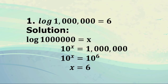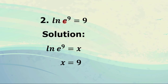Moving on to number 2: ln of e raised to 9. The natural logarithm and this exponential expression are inverse functions of each other. So if we have ln of e raised to 9, the ln and the e will cancel out and the answer is 9. We let ln of e raised to 9 equal x, and since ln and e cancel out, we get 9 equals x, or x equals 9.